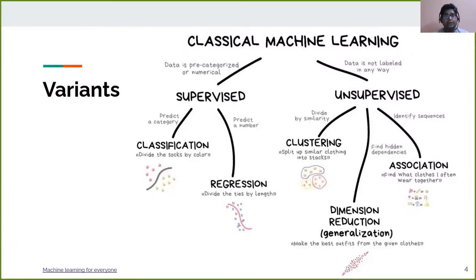Here in this slide, we will learn about different types of machine learning. Broadly, machine learning algorithms are classified into two types: supervised and unsupervised. In supervised learning, we have labels defined for each data point. The labels can also be known as classes, targets, or outputs. But in unsupervised learning, we do not have any target.